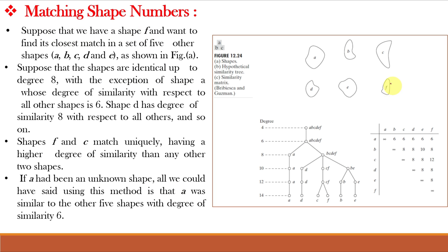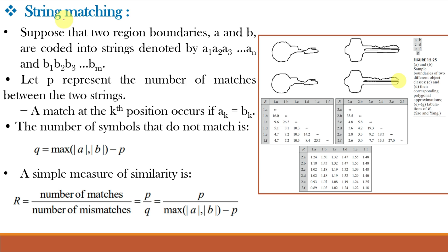Now suppose we have a shape F and we want to find its closest match in a set of five other shapes A, B, C, D, and E. From the figure we can see that F is matching mostly with C as compared to other shapes. Up to degree 6 we can see that all the shapes are matching, and shape F and C match uniquely, having a higher degree of similarity than any other two shapes. From this similarity tree we can write the similarity matrix, where if A were an unknown shape, then A is similar to shapes B, C, D, E, and F with a degree of similarity up to 6.